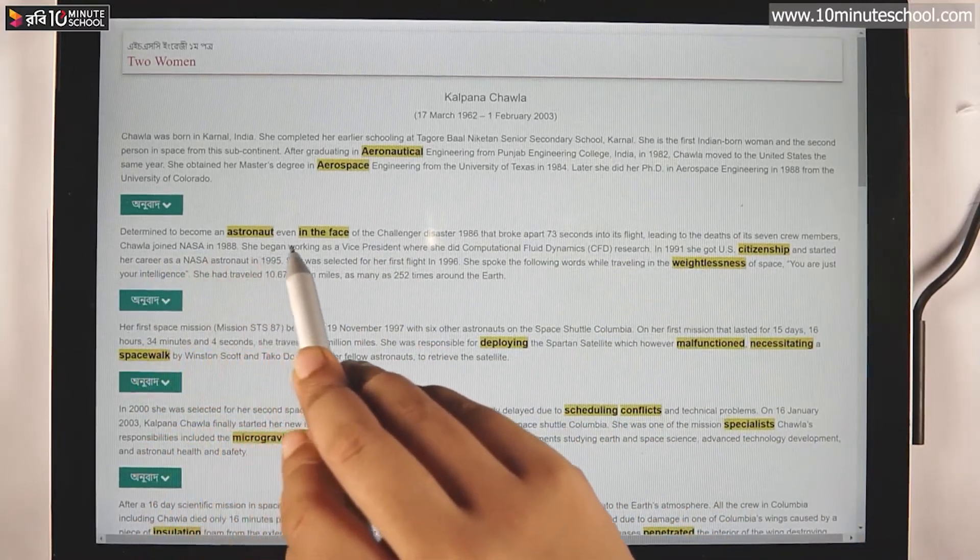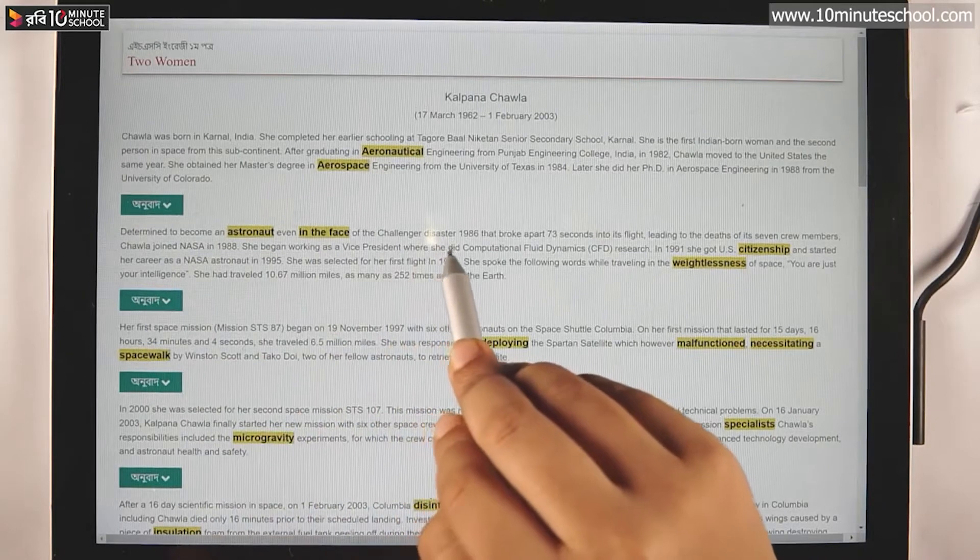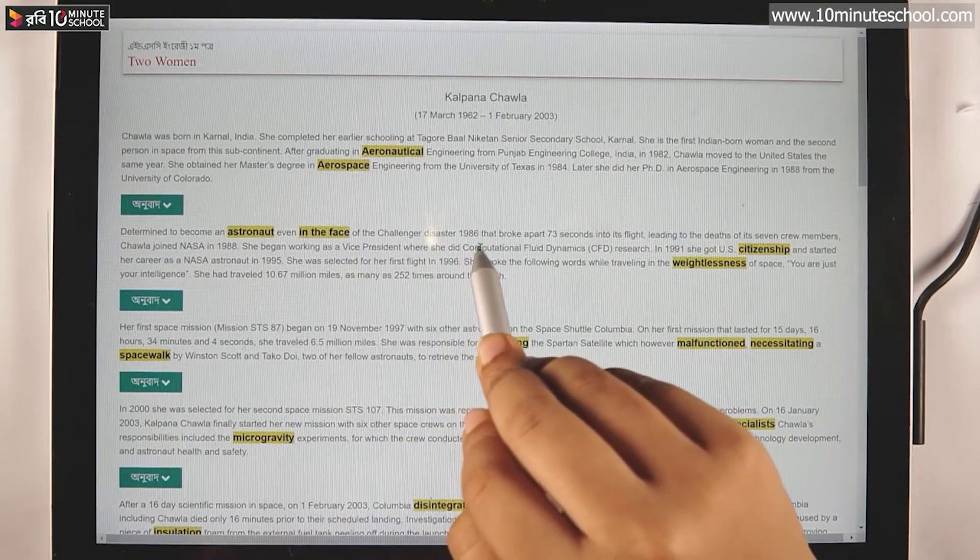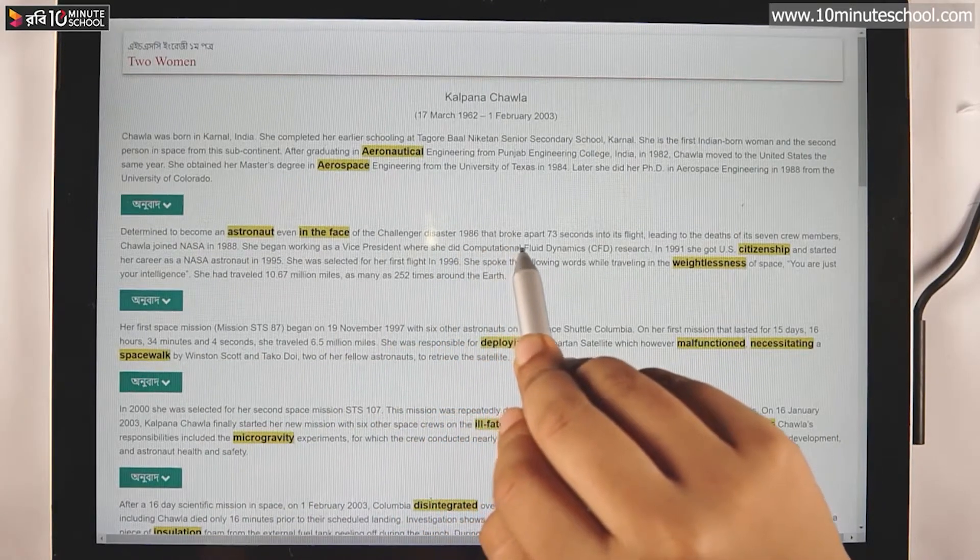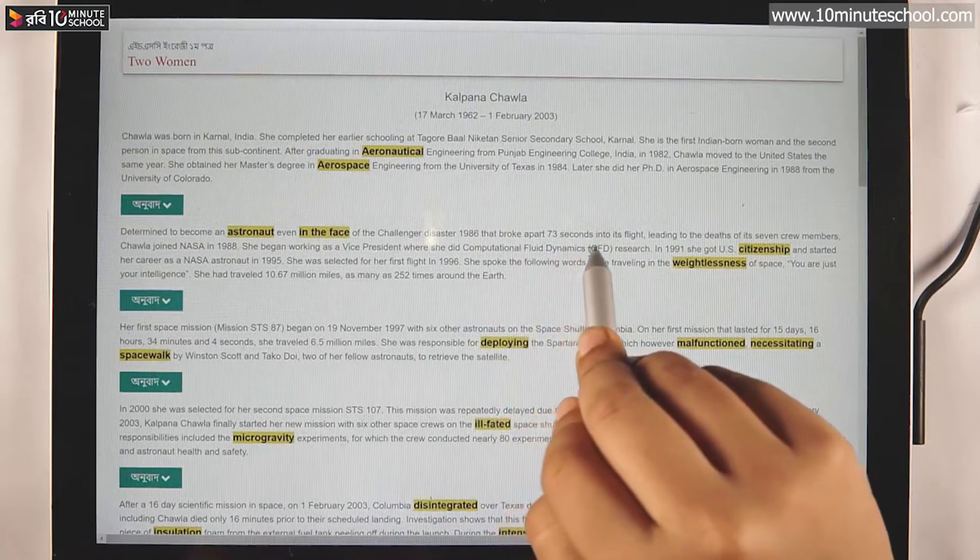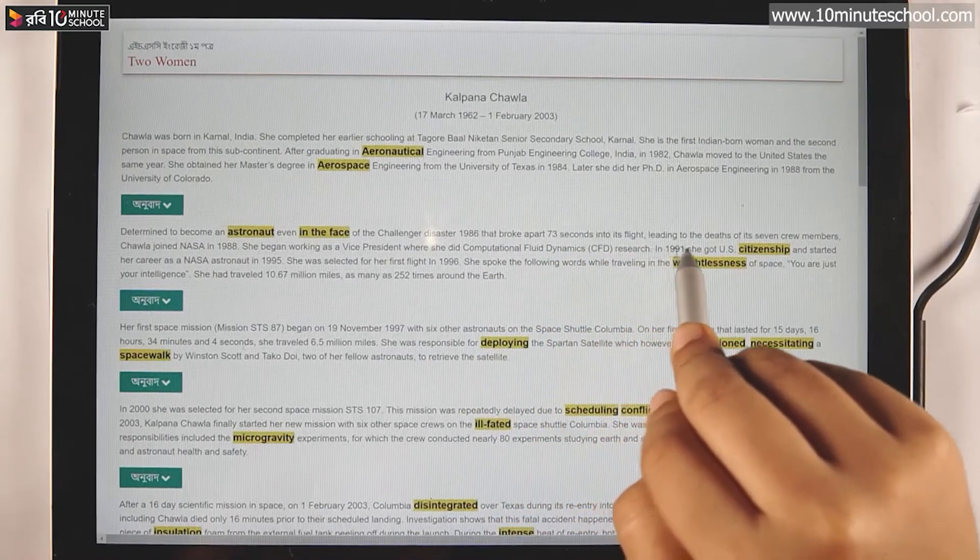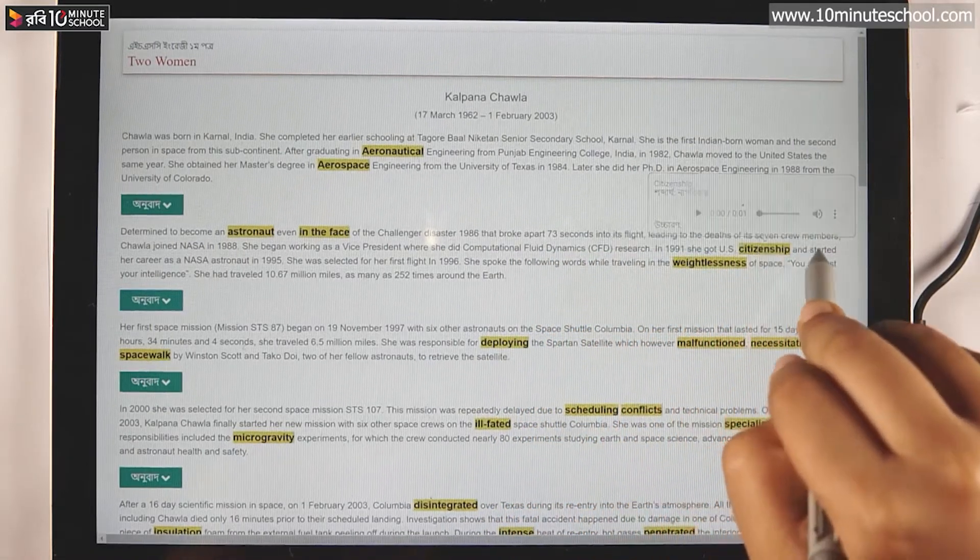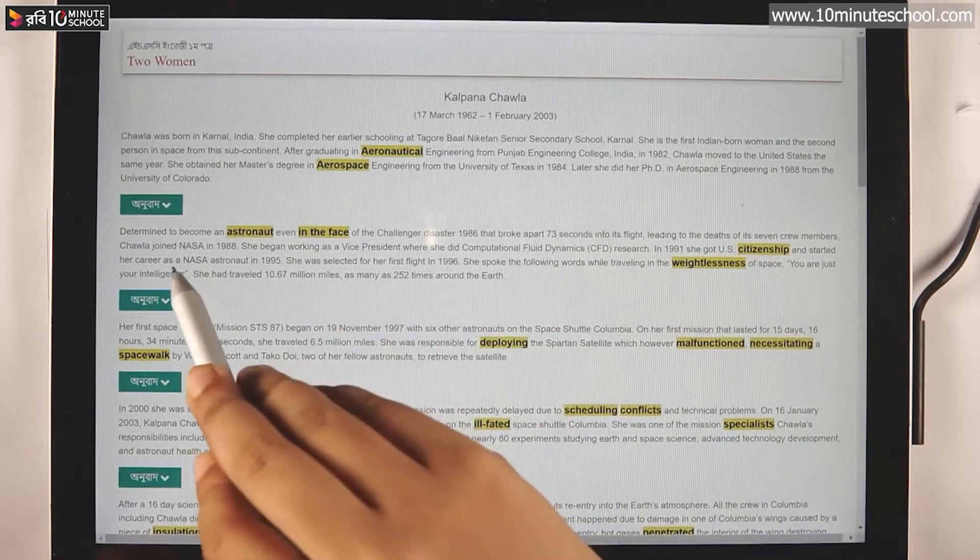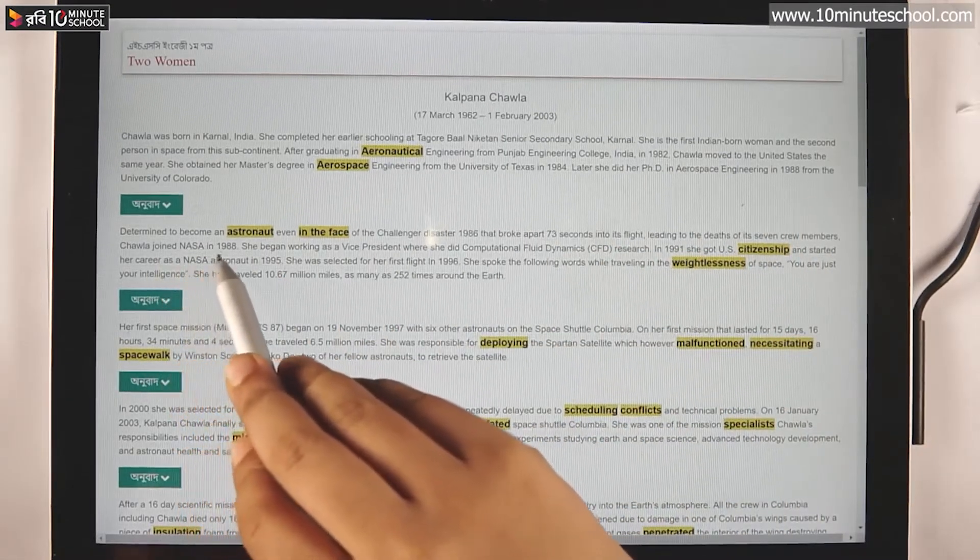Determined to become an astronaut even in the face of the Challenger disaster in 1986 that broke apart 73 seconds into its flight, leading to the deaths of its seven crew members. Many of them joined NASA in 1988.